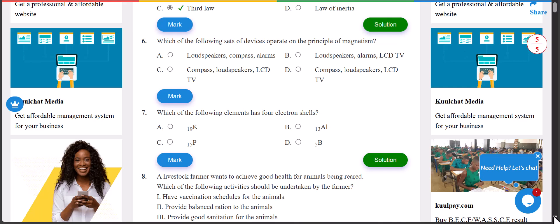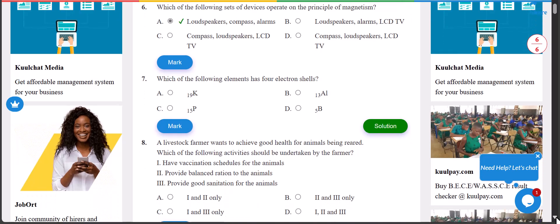Number six: which of the following sets of devices operate on the principle of magnetism? The answer is A - we have loudspeaker, compass and alarm. They all operate based on magnetism or magnet.